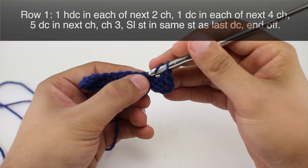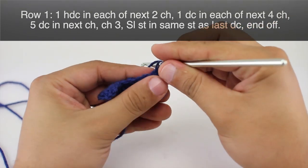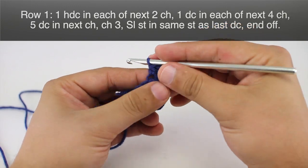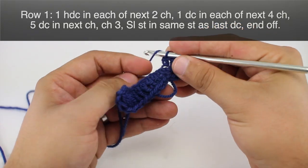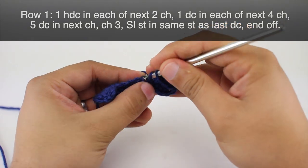A half double crochet. And we're just working into the base of the chains from the row before, or the other side. Another half double crochet.